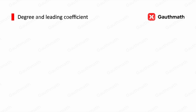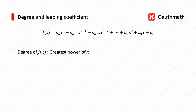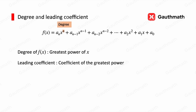Now let's introduce the degree and leading coefficient. In standard form written in descending order, the degree of the polynomial is the greatest power of x, which is n. The leading coefficient is the coefficient of the greatest power term, which is a_n. And a_0 is the constant term.